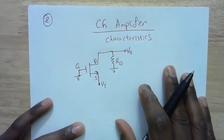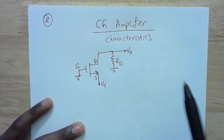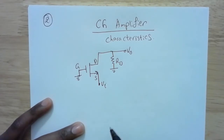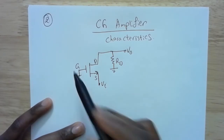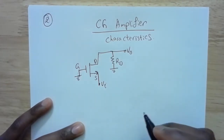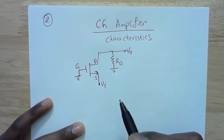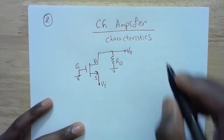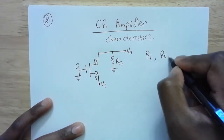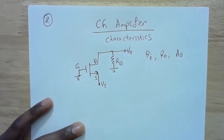In this video we're going to analyze the characteristics of a common gate (CG) amplifier. Common gate means the gate is grounded, the input is applied at the source, between the source and the gate, and the output is measured between the drain and the gate. Similar to what we did for the common source amplifier, we're going to measure the input impedance Ri, the output impedance Ro, and the open circuit voltage gain Ao.